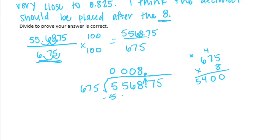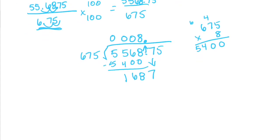If I added another 675, it would be too big. So we have 168 left. Bring down the 7. How many times could 675 go into 1,687? Probably 2 or 3 times. 600 times 3 would be 1,800, which would be too big. So a little bit more would be even bigger. So it can probably only go in twice.